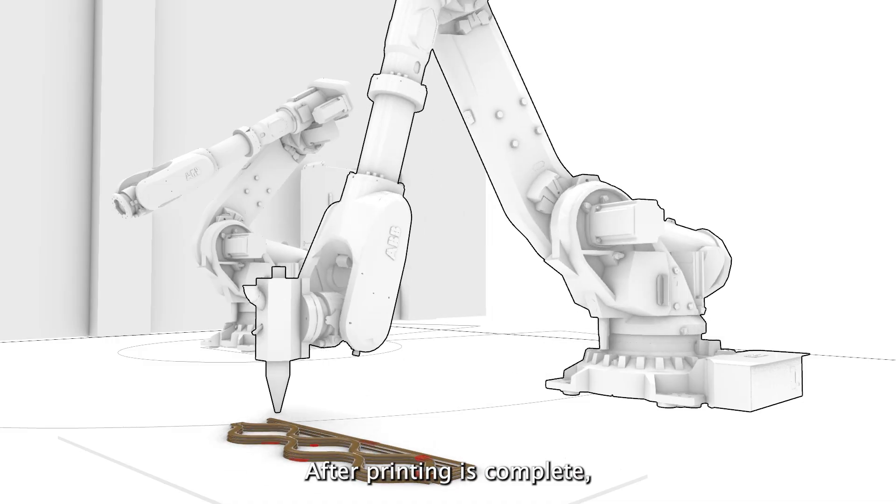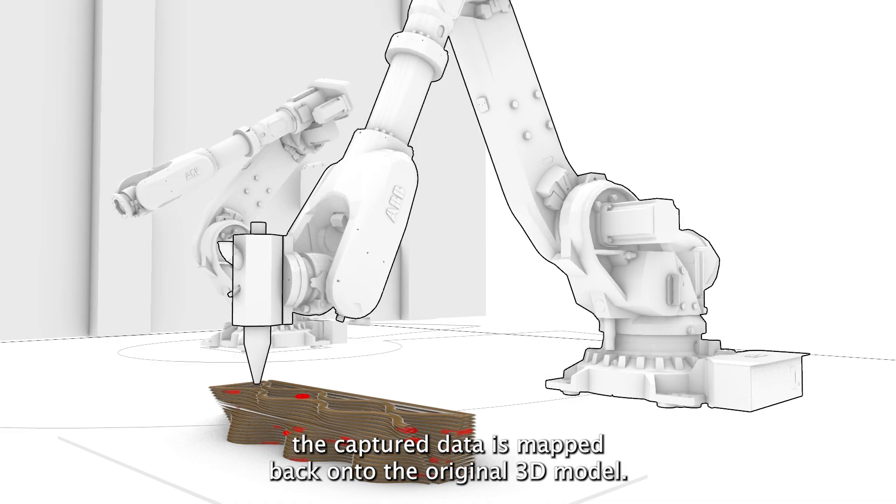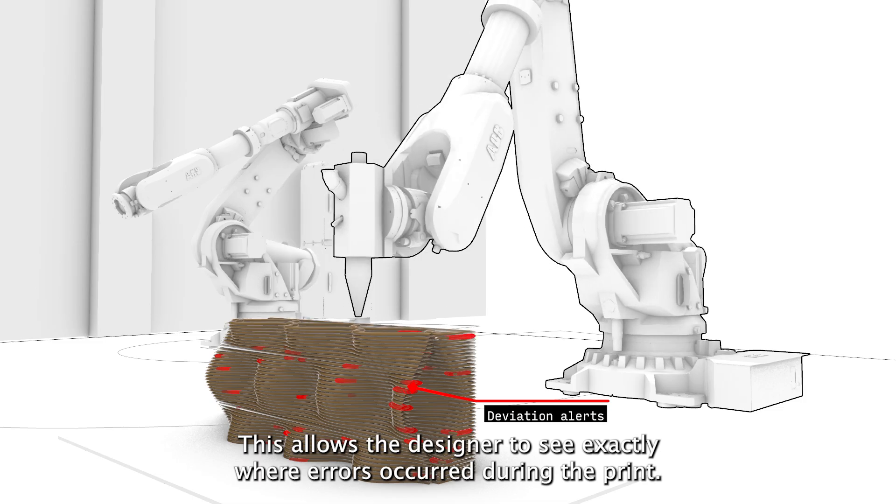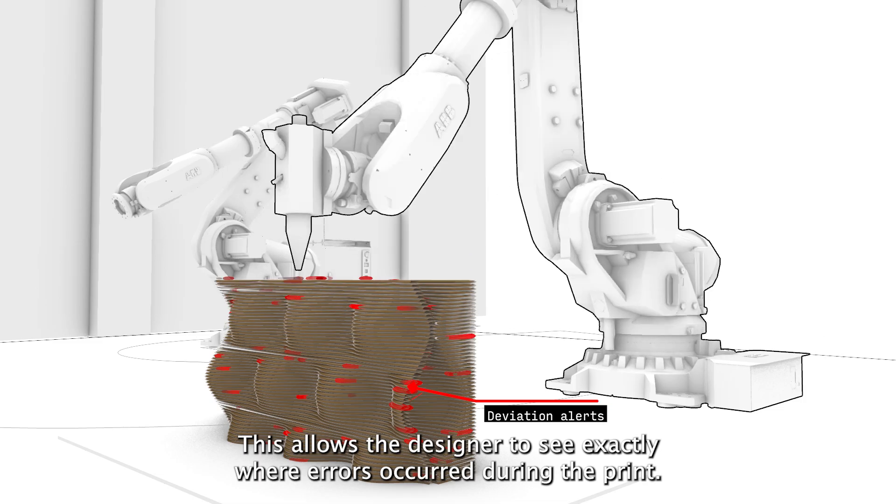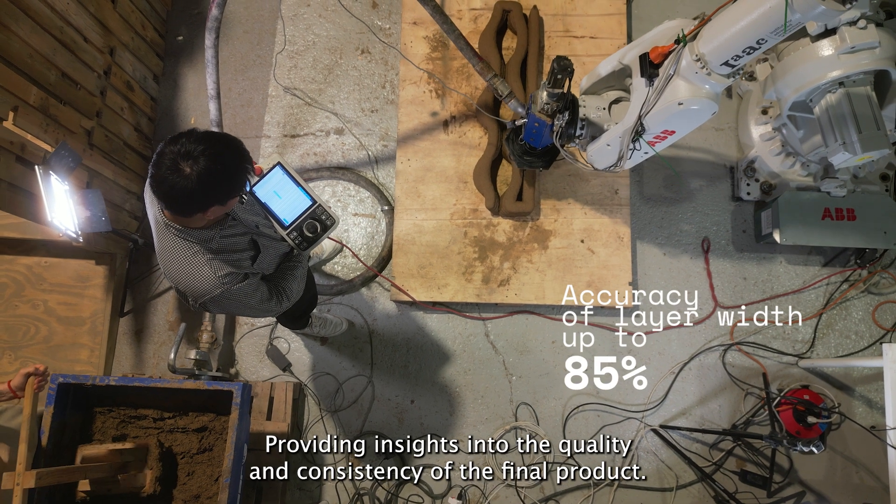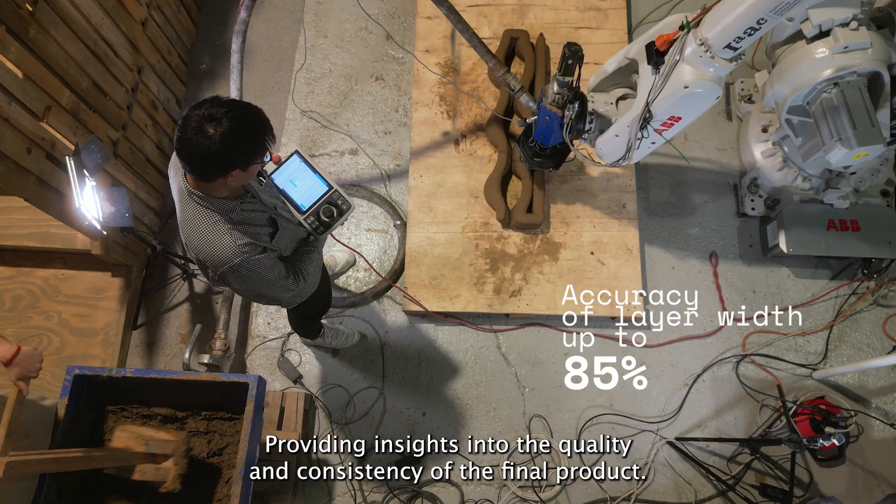After printing is complete, the captured data is mapped back onto the original 3D model. This allows the designer to see exactly where errors occurred during the print, providing insights into the quality and consistency of the final product.